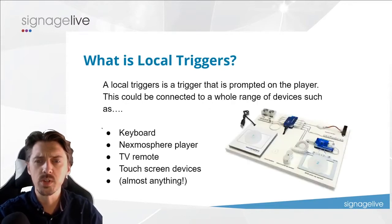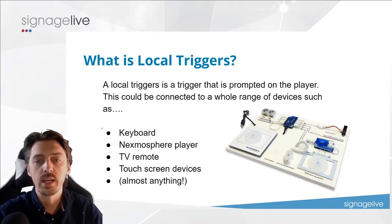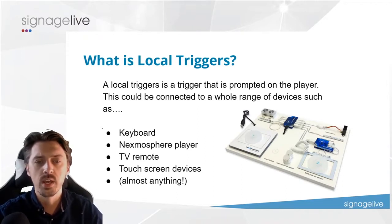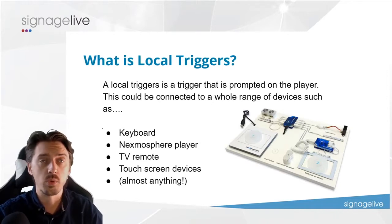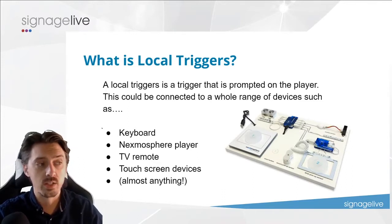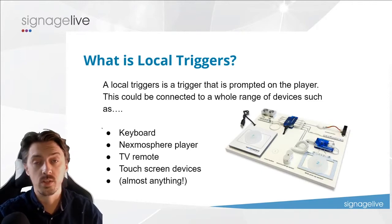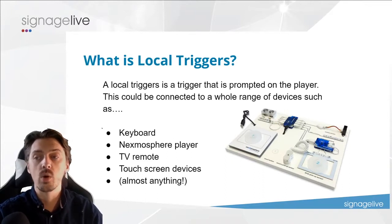So what is a local trigger? Simply put, a local trigger is a trigger that is prompted on the player itself — not done away from the device or on the cloud, but something you plug directly into the device or chosen hardware. Some examples include keyboard interrupt, probably the simplest option: plug a USB keyboard into your device, hit 'T' for example, and it will trigger a content change from a layout to a playlist.